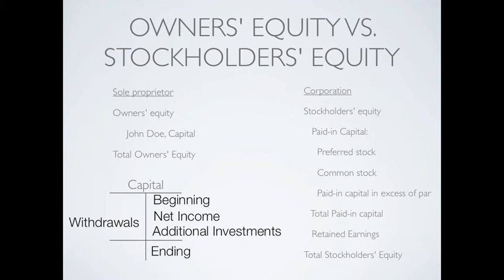We have what's called a paid-in capital section in the stockholders' equity section of the balance sheet. Under paid-in capital we have preferred stock and common stock, as well as paid-in capital in excess of par, which we'll be discussing. Those three things together give us total paid-in capital, and then we add our retained earnings to that, which gives us our total stockholders' equity.